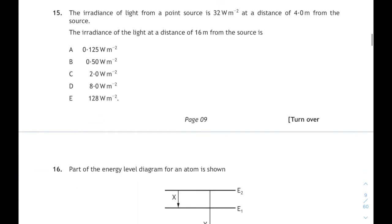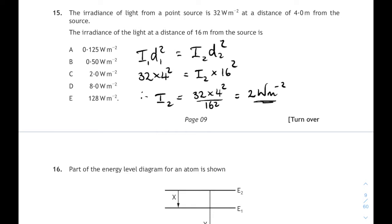Number 15 is irradiance. The irradiance of light from a point source is 32 watts per square meter at a distance of 4 meters. What will the irradiance be at 16 meters? You could just go straight to your relationship sheet and do i1d1 squared equals i2d2 squared. It's i2 that we are looking for. So i1 is 32 times 4 squared equals i2 times the new distance is 16 squared. Don't forget to square your distances. Rearrange for i2. So 32 times 4 squared over 16 squared. If you do that on your calculator, you will get 2 watts per square meter.